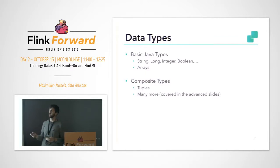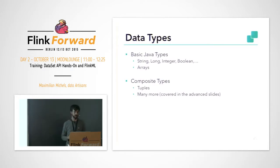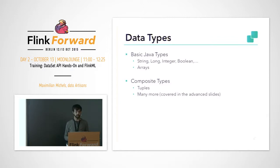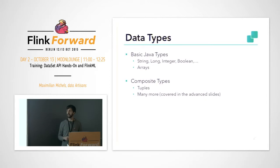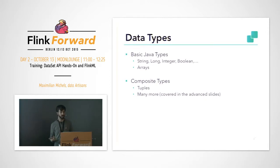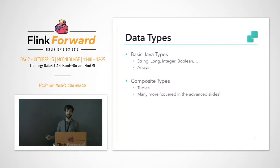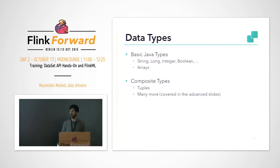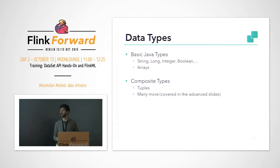You can use all the data types which are included in Java, like String, Long, Int, Boolean, and also arrays if you want. But you can also compose these basic types into composite types, which means you have a kind of nesting — like in tuples, you have multiple of these types in a tuple. You can also create arbitrary Java objects, but that's not covered here for simplicity.